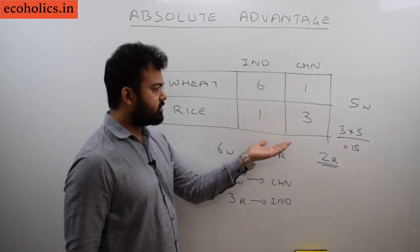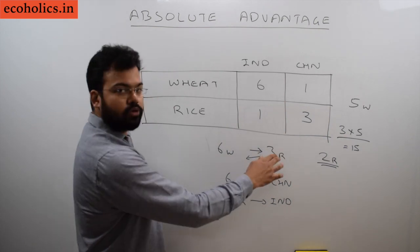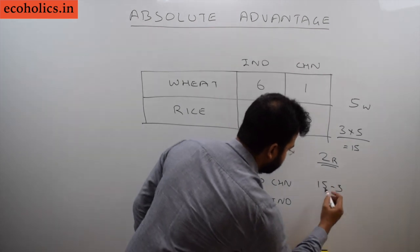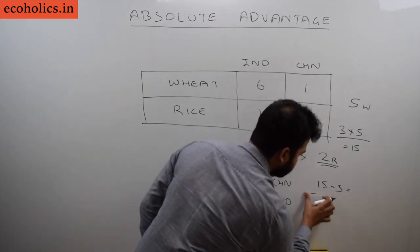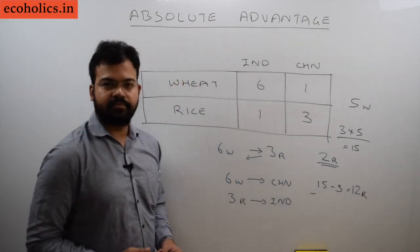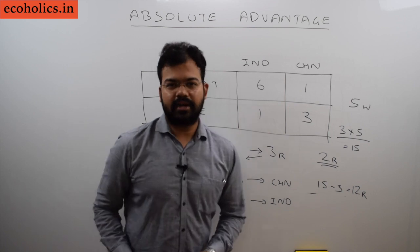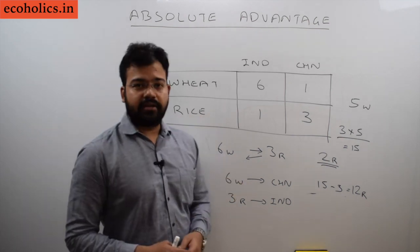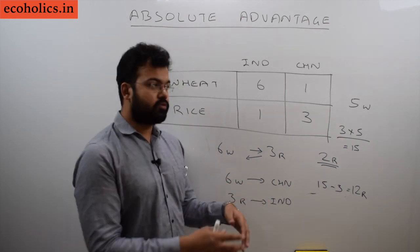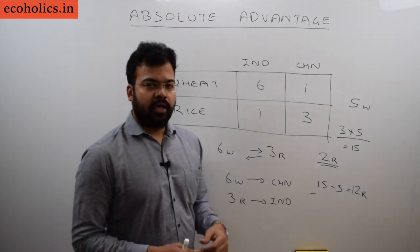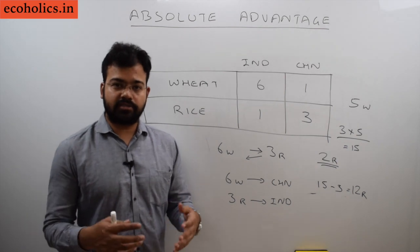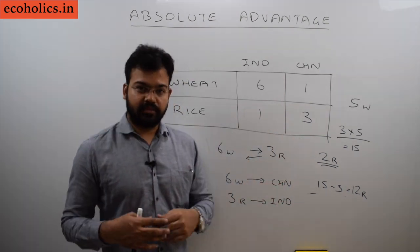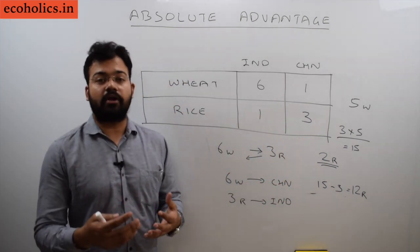This is a straightforward example of the absolute advantage theory, which can be seen as an extension of Adam Smith's division of labor — applied domestically and extended to international trade. Although this theory provides the foundation, it was David Ricardo who explained more complex scenarios where countries without absolute advantage can still trade and gain from international trade.